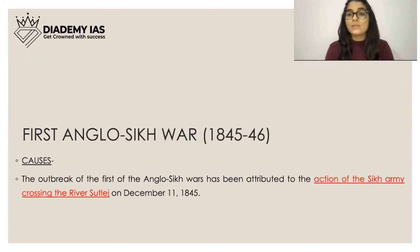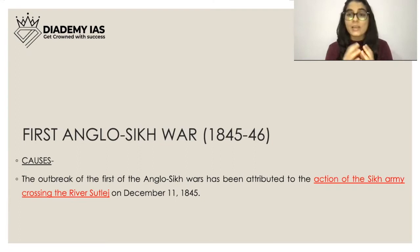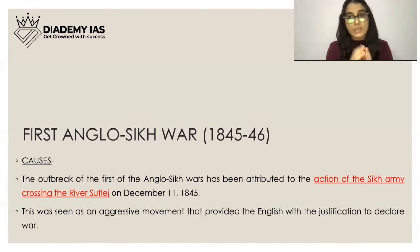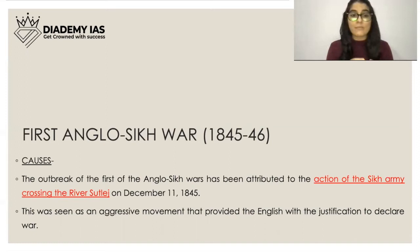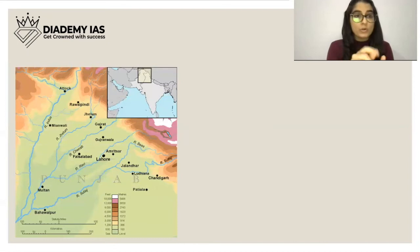The outbreak of the First Anglo-Sikh War has been attributed to the Sikh army crossing the River Sutlej on December 11, 1845. After Ranjit Singh's death, the Sikh rulers tried to expand their empire by crossing the Sutlej. This was seen as an aggressive movement that provided the English with the justification to declare war.